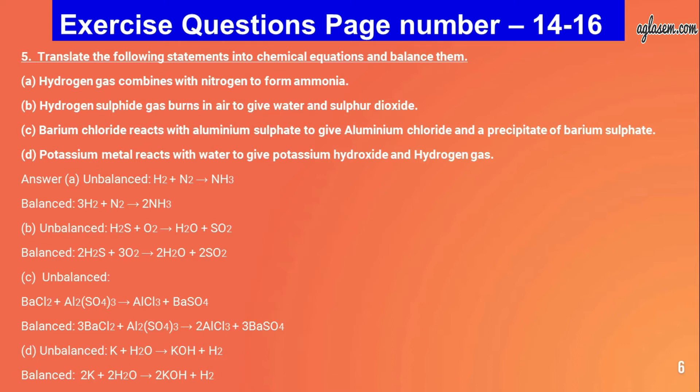D - potassium metal reacts with water: unbalanced K + H₂O → KOH + H₂; balanced: 2K + 2H₂O → 2KOH + H₂.